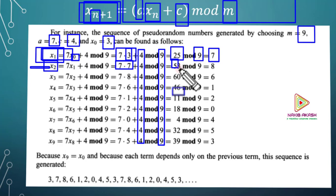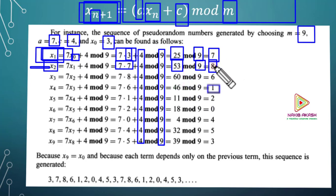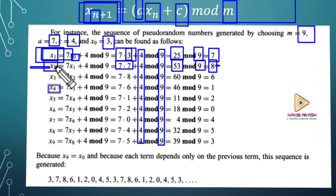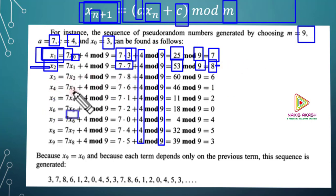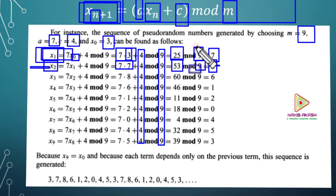We need to calculate 53 mod m, which gives us 8. So x3: x2 equals 7, and 7 into x2 plus 4 mod m. Working through: 4 mod m gives 4, and 9 mod m gives 9. So x3 equals 9.